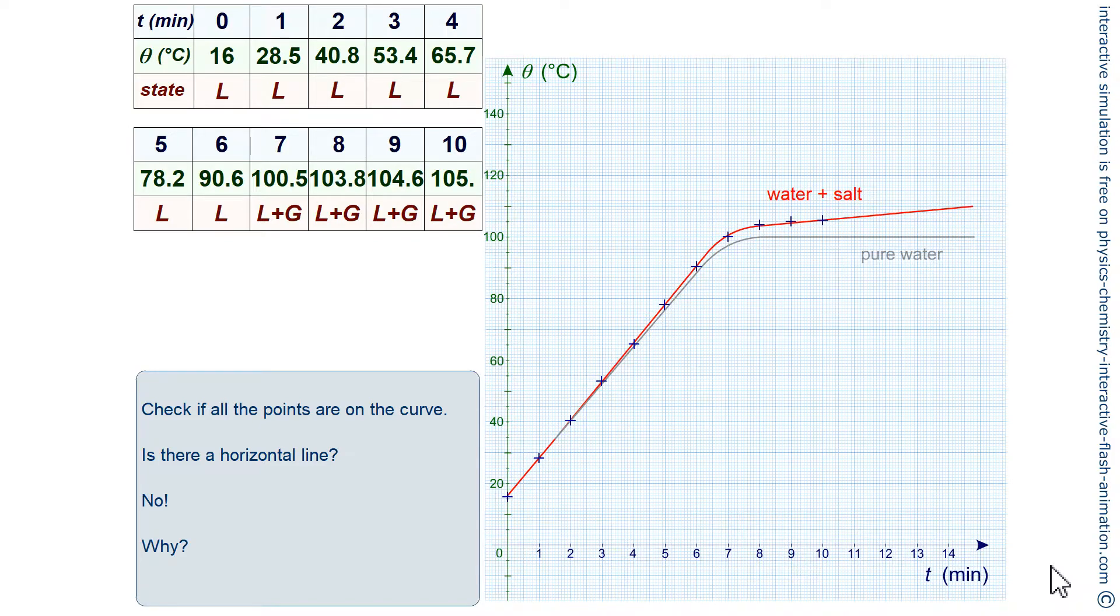And we will try to answer the question that is there: is there a horizontal line? Well, the temperature of salted water at boiling does not have a perfectly horizontal part, but it rises, while the temperature of pure water remains stable at 100 degrees Celsius. We see that here the curve increases slightly.